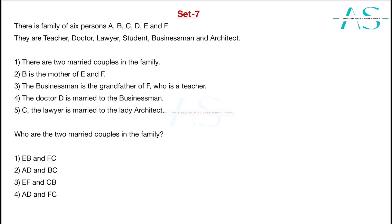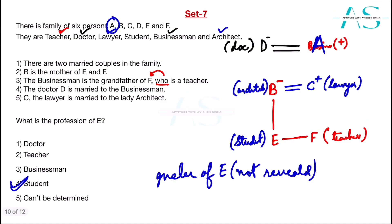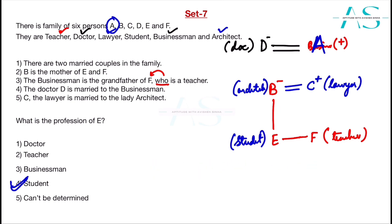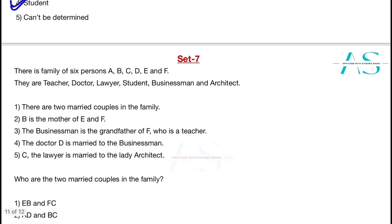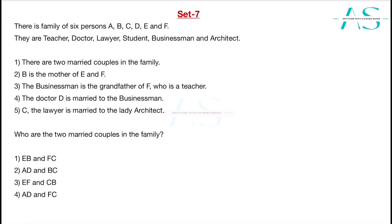Who are the two married couples in the family? Looking at the diagram, the two married couples are A & D and B & C. Checking the options — yes, option number 2 matches.